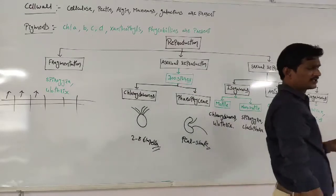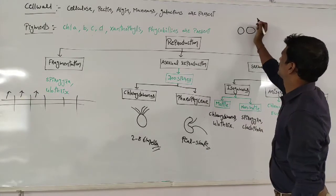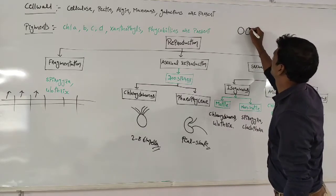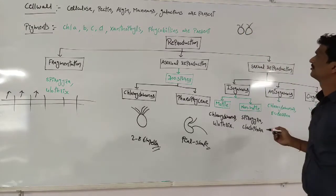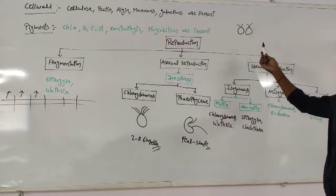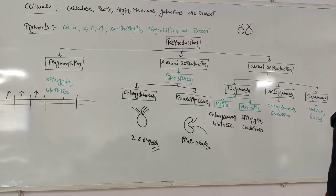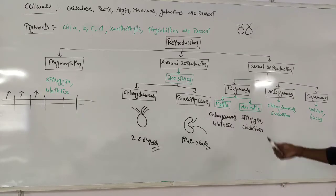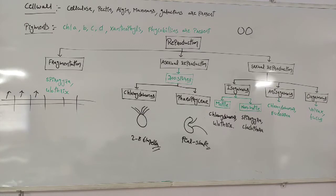The sexual reproduction process: isogamy means both gametes are having equal size. In certain cases mobile, in certain cases non-mobile — if they are having flagella, they are motile. Isogametes are equal sizes of male and female gametes. Motile examples are Chlamydomonas and Ulothrix. Non-motile, equal-size gametes are found in Spirogyra and Cladophora.